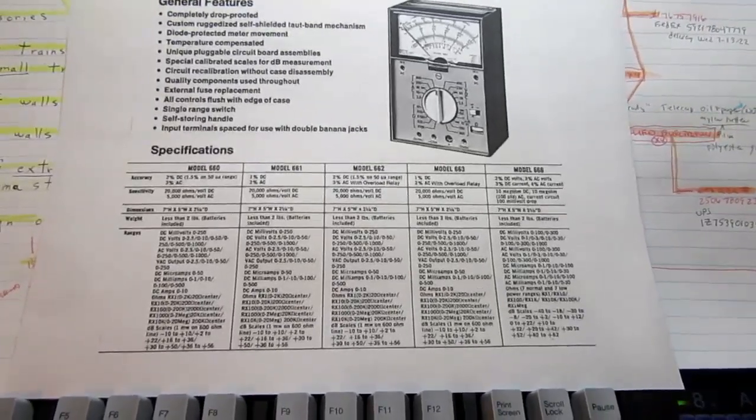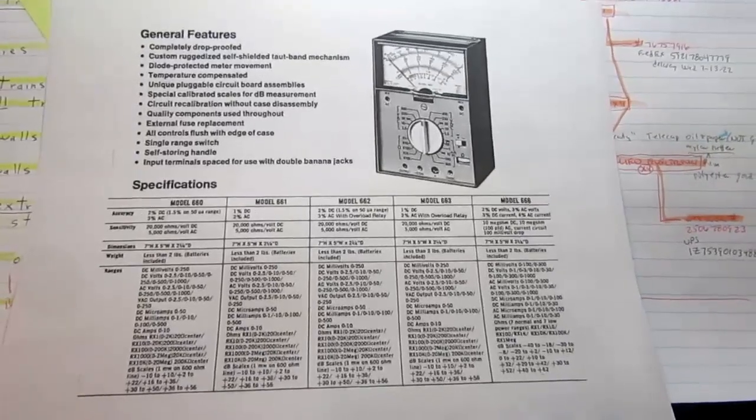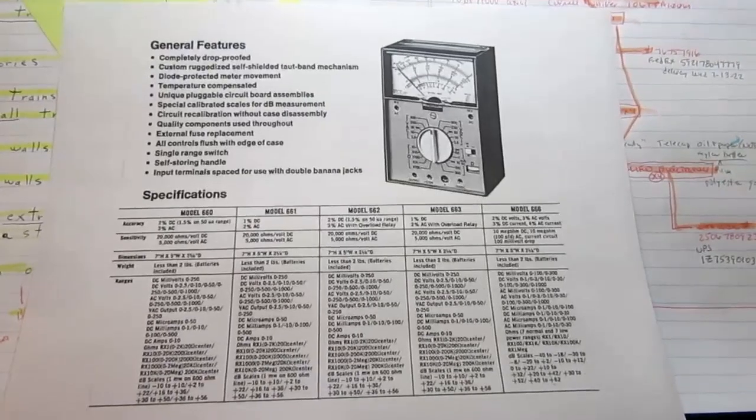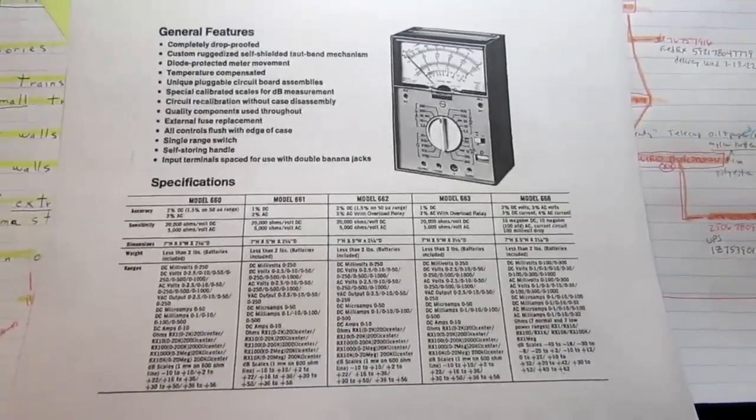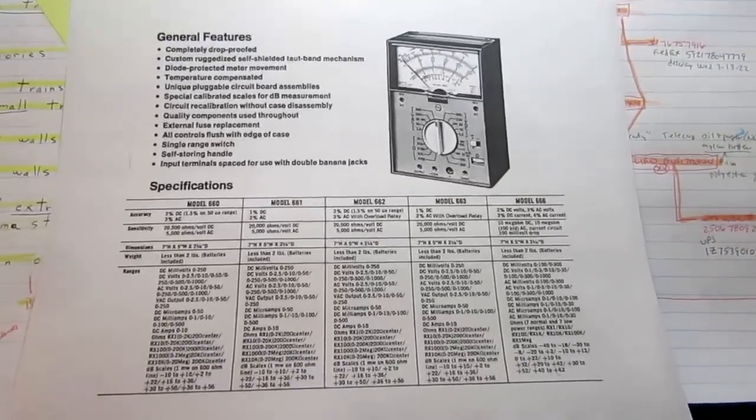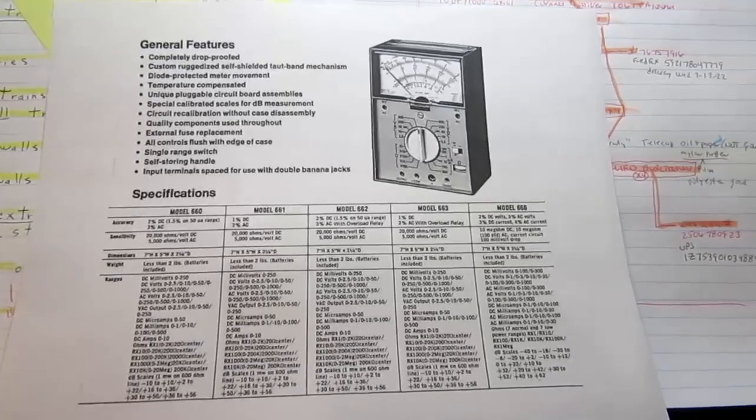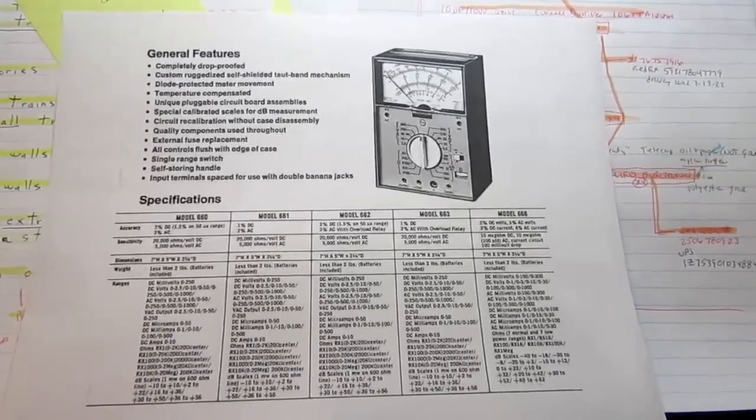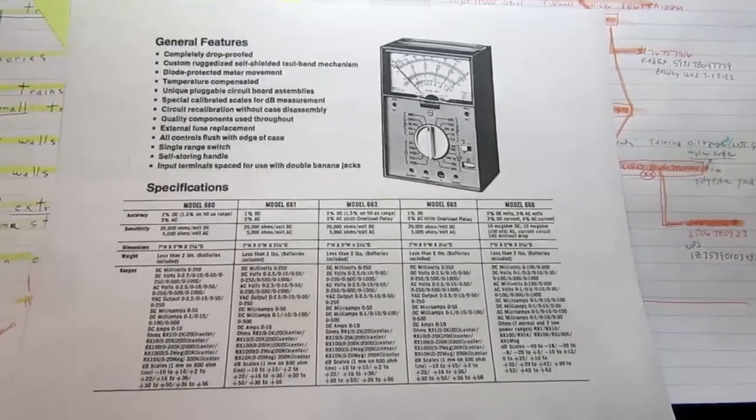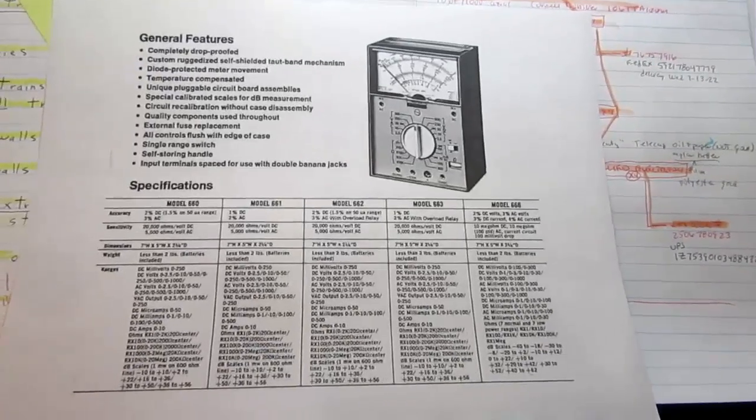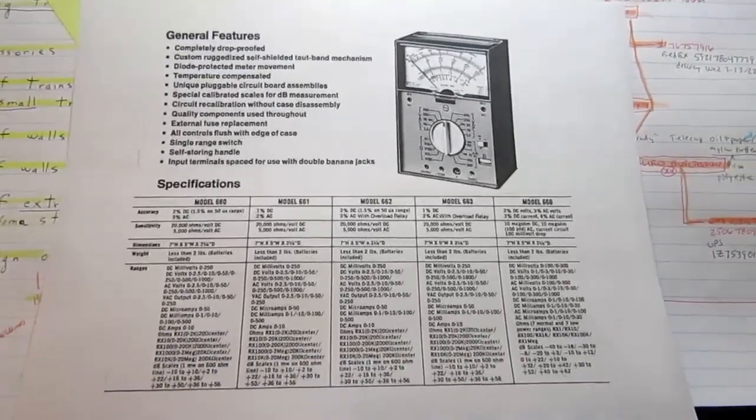While Heathkit produced the IM-105 kit, it was essentially a clone of the Weston 660. This is the closest cloning I've observed personally in my experience with Heathkit test equipment. I found some others that were inspired by commercial equipment and possibly reverse engineered, but in this instance the two are essentially the same exact meter. With the Model 660, Heathkit just obtained a set of parts from Weston and kit-ized them.